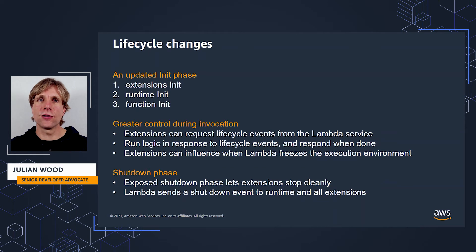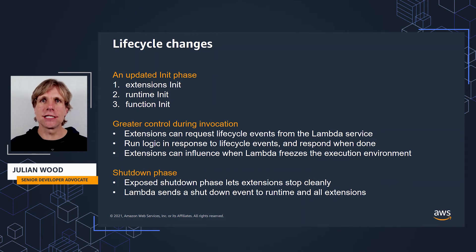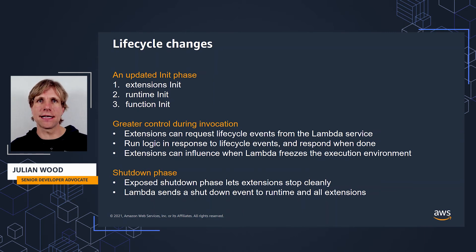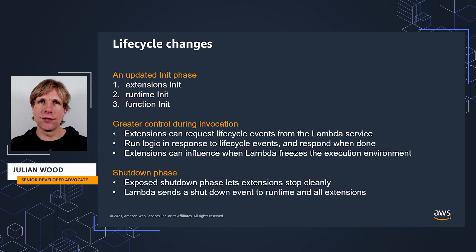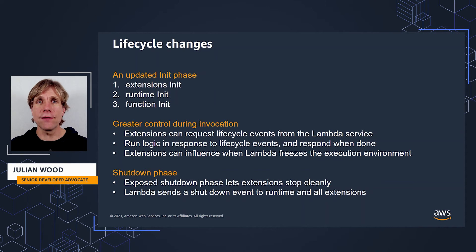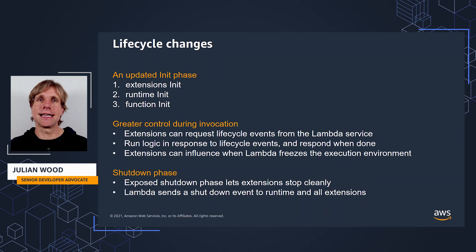Extensions also give you greater control during the invocation. During the invoke phase, the Runtime requests the invocation event and invokes the function handler. Extensions plug into this and can now request lifecycle events from the Lambda service, run logic in response to those events, and respond to the Lambda service when they are done. The Lambda service freezes the execution environment when it hears back from the Runtime and all extensions. In this way, extensions can influence the freeze-thaw behavior.